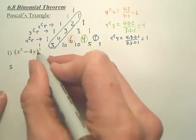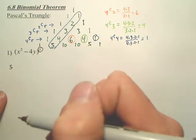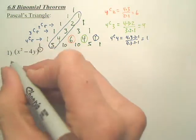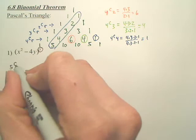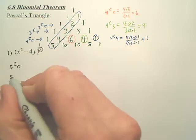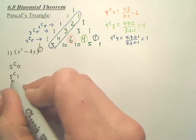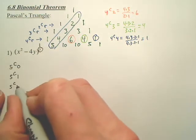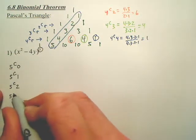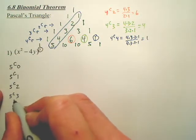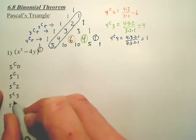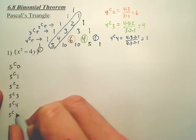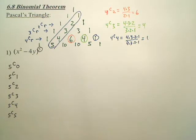You start with the power — that's a fifth power. So you start with 5C0, then 5C1. It has to be written vertically like this. So we're working our way down, starting with 5C0.